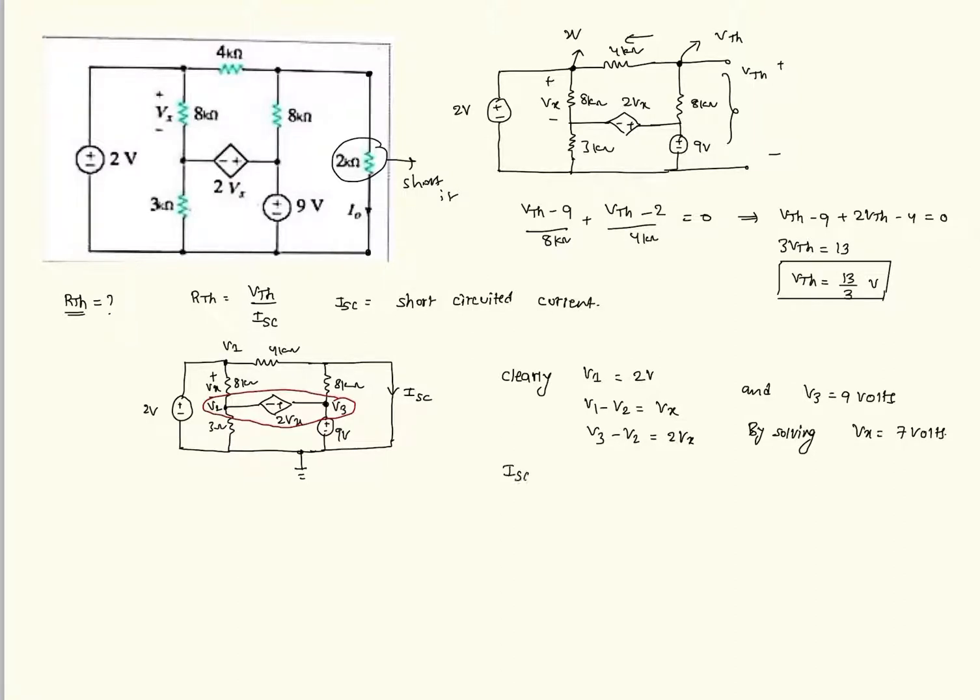But ISC is by writing KCL here. ISC is nothing but V1 by 4 kilo ohm plus V3 by 8 kilo ohm. Because here 8 kilo ohm resistor and 9 volt source are parallel. Both are. Because one end of 8 kilo ohm resistor is connected to positive end of 9 volt source. And second end of the 8 kilo ohm resistor is connected to negative end of the 9 volt source.